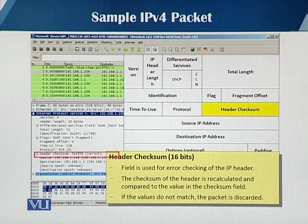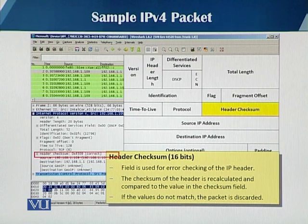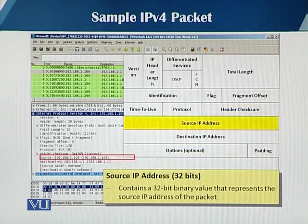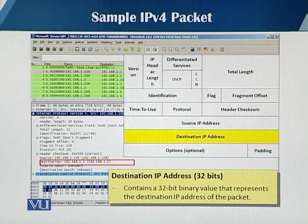The header checksum field is a 16-bit field used to detect any errors in the IP header. The checksum is calculated at every hop, meaning by every router. We also have a 32-bit source IP address field and a 32-bit destination IP address field in the IPv4 packet header. That covers the structure of an IPv4 packet, looking into each and every field of the IPv4 header.